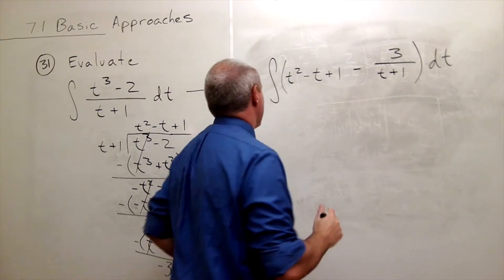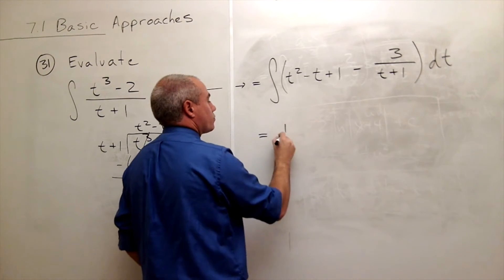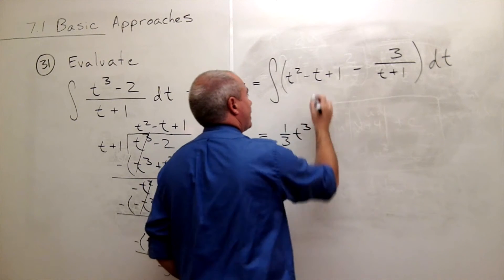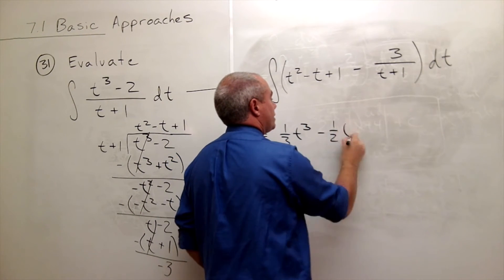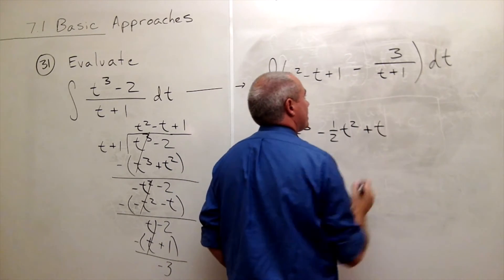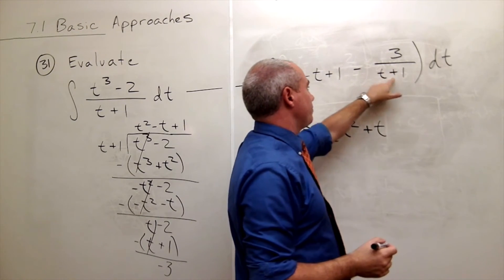Let's take antiderivatives here. Antiderivative of t squared is 1 third t cubed. Antiderivative of negative t is negative 1 half t squared. Antiderivative of 1 is t. And now the antiderivative of negative 3 over t plus 1.